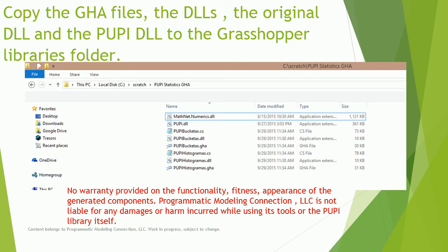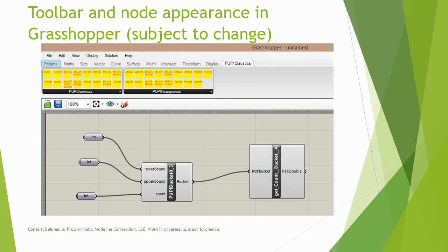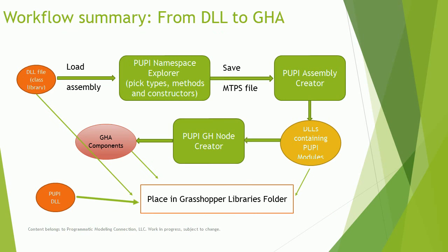Programmatic Modeling Connection disclaims all warranty. After all the files are copied, you need to restart Rhino and Grasshopper to be able to see the new toolbars. This is a summary of the steps showing the entire workflow. This chart is also available in the Getting Started with PAPI document packaged with the software.